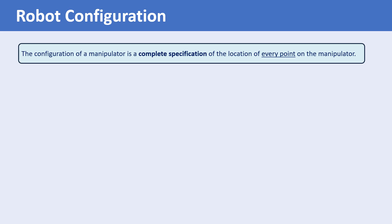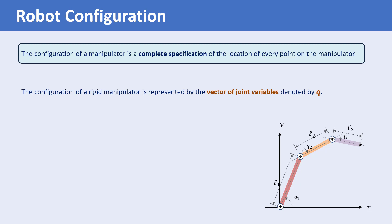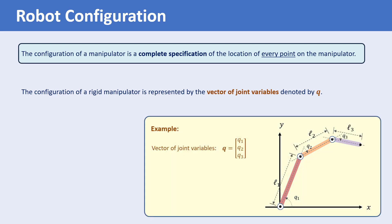For instance, if we have a robot with three revolute joints and three links, and if we know the parameters of the robot such as the dimensions of the links, we can locate every point on the robot using the joint angles q1, q2, and q3. So the configuration of a rigid manipulator is represented by the vector of joint variables, which is denoted by q. The configuration of this robot can be obtained using a vector of joint variables q, which is a three by one vector.